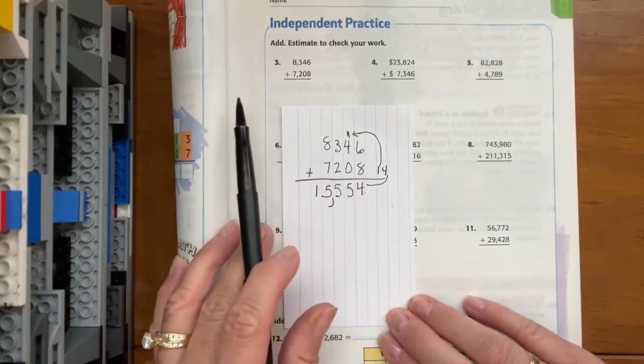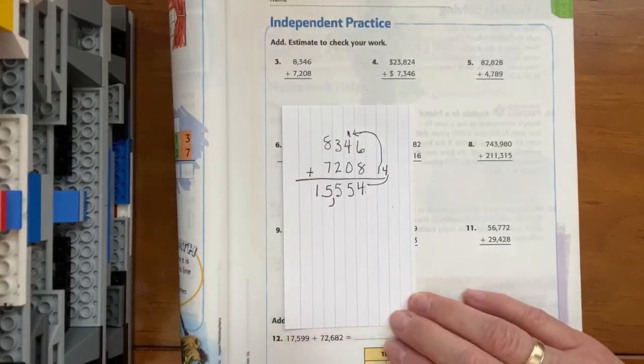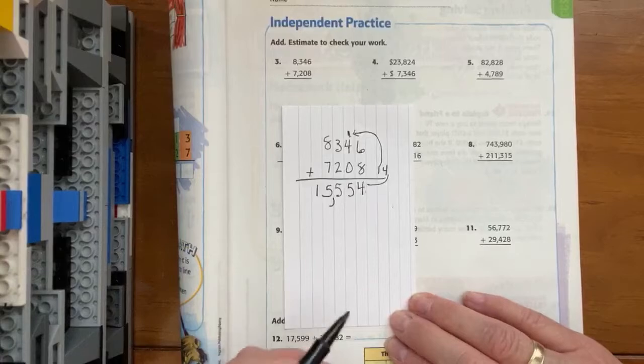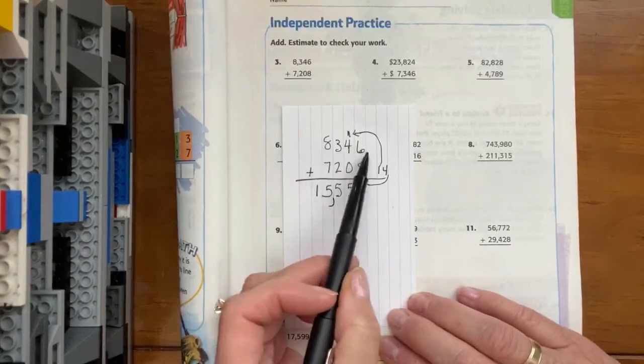So here they ask you to estimate to check your work, which was Chapter 1, right? We were estimating. So 8,300, is that closer to 8,000 or 9,000? Hopefully you said it's closer to 8,000.